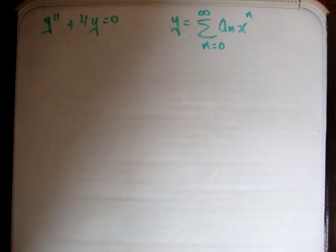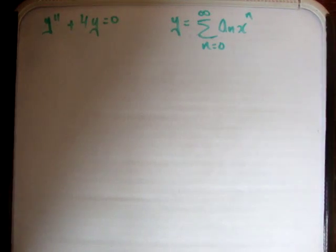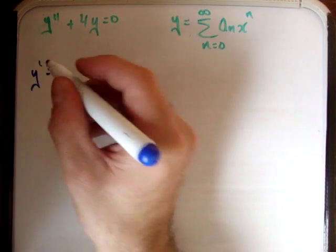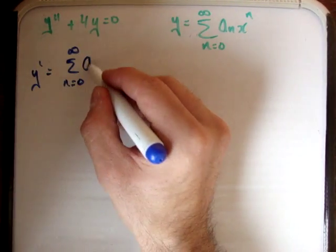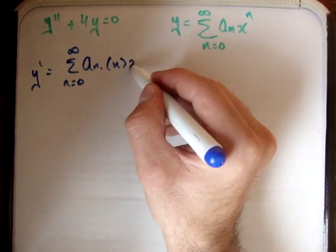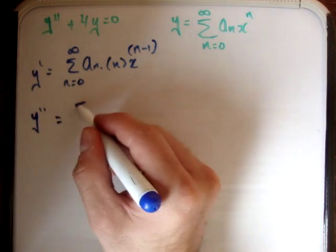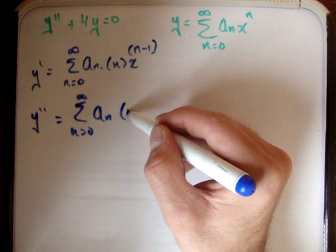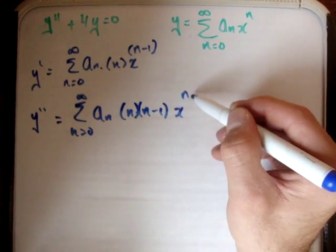The first thing we need to do is to guess the components of this differential equation. We have y, because we're given that y is equal to the sum of a_n times x to the n. So we need the second derivative: y prime is equal to the sum from n equals 0 to infinity of a_n times n times x to the n minus 1. Similarly, y double prime is equal to the sum from n equals 0 to infinity of a_n times n times n minus 1 times x to the n minus 2.